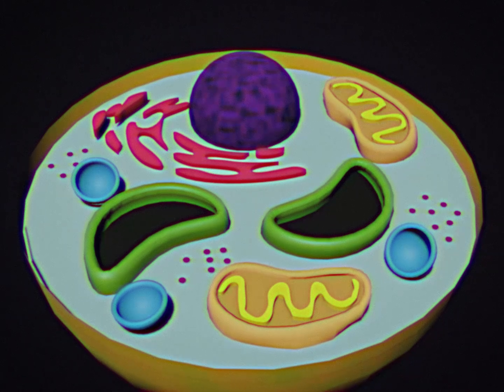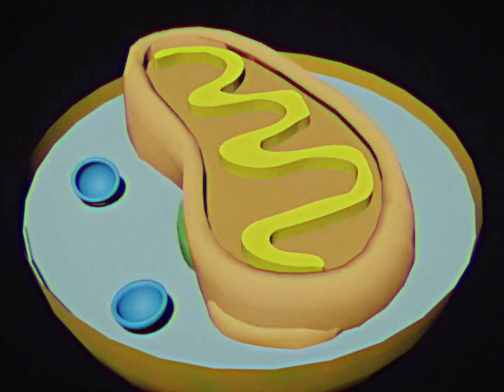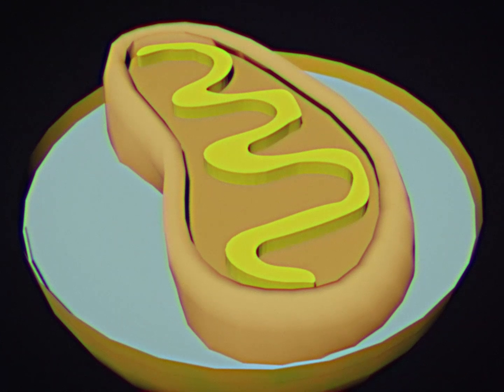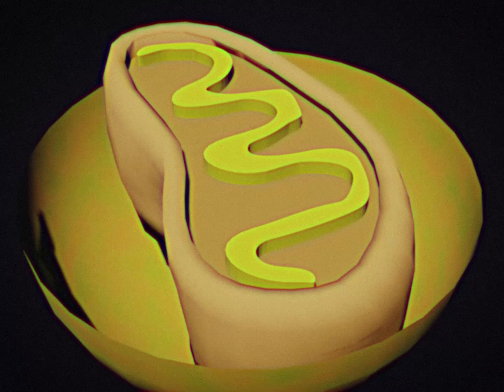When this occurs, the mitochondria, also called the powerhouse of the cell, gains sentience and immediately absorbs every other organelle, including the cytoplasm and the cell membrane.